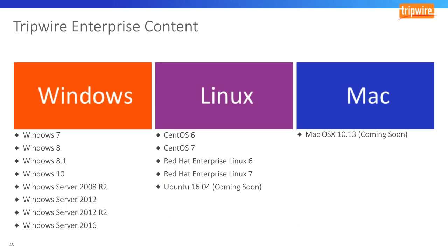Tripwire Enterprise has coverage for every supported version of Windows, including desktop variants 7 through 10 and server variants 2008 R2 through 2016. On the Linux side, we have CentOS 6 and 7 and Red Hat Enterprise Linux 6 and 7. Ubuntu and other Debian flavors are shipping soon, as well as Mac OSX. If you're interested in the content, you can access all these policies and rules from the Tripwire Customer Center right now.